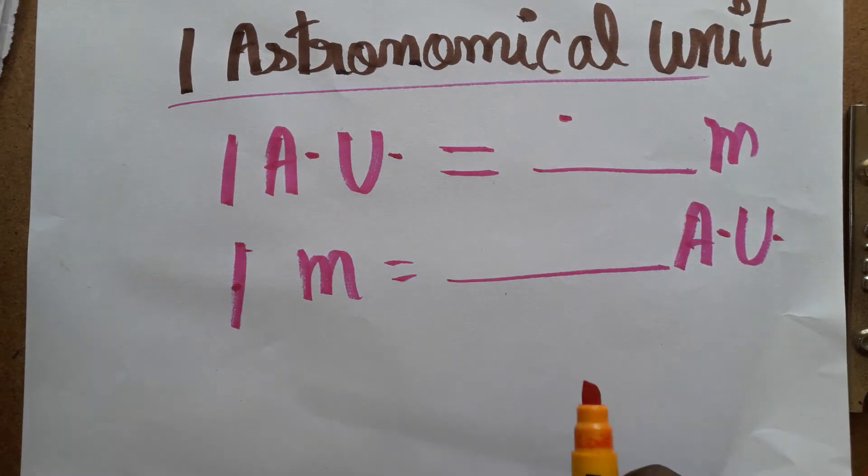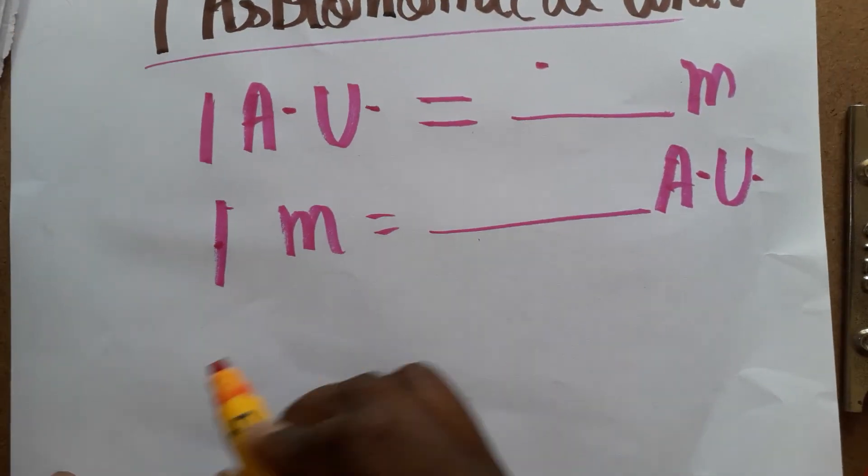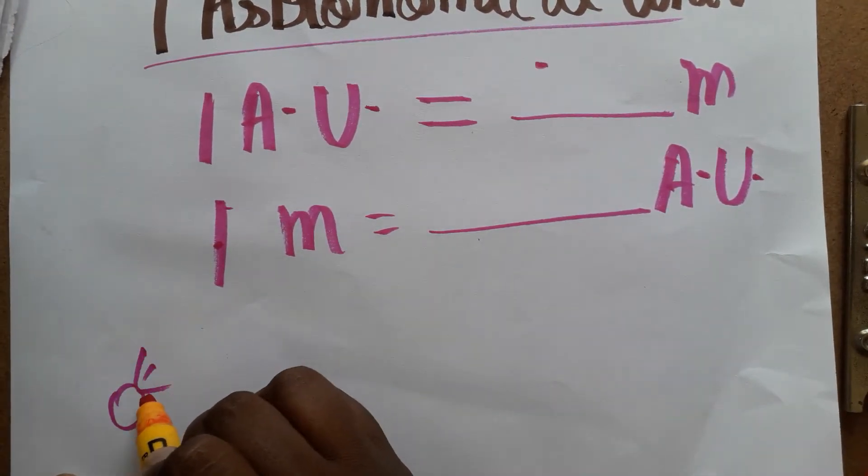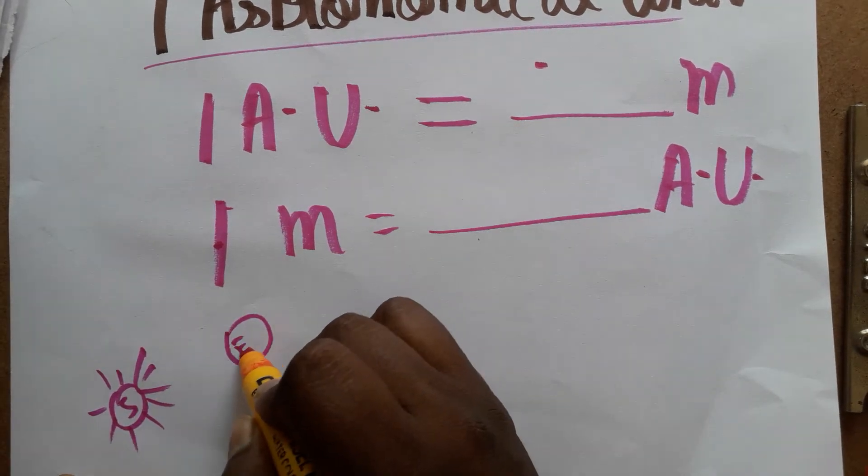First we will see what is astronomical unit. The astronomical unit is a distance between the sun and earth. We are taken as an astronomical unit. Sun and the earth distance we can take as AU.